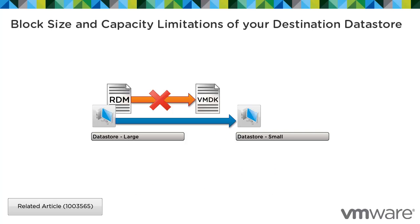Raw device mappings occasionally represent large raw LUNs. If you clone a virtual machine with an RDM still attached, the contents of the raw LUN mapped by the RDM are copied into a new virtual disk file at the destination. Converting an RDM into a virtual disk file does not succeed if your destination data store does not have the capability of storing single contiguous files as large as the raw LUN. Large virtual disks have the same requirements as per the recommended practice and supportability guidelines.